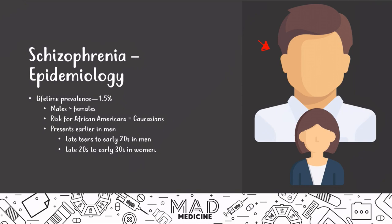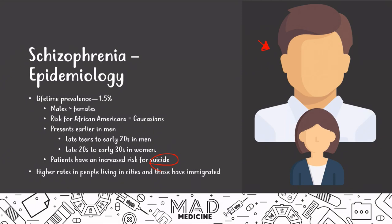It's usually going to be a younger male who presents to your clinic. Patients have an increased risk for suicide, so if you have a schizophrenic patient, you have to monitor them for suicide. They're obviously going to be hearing voices and may be depressed, which can cause them to lean towards suicide more than a healthy person. Finally, there are higher rates of schizophrenia in patients who live in cities and those who have immigrated.